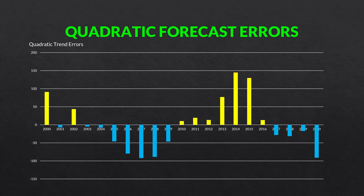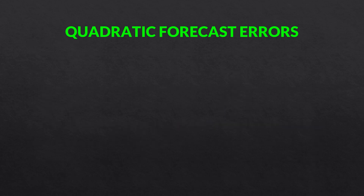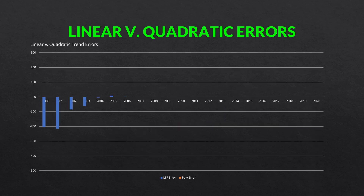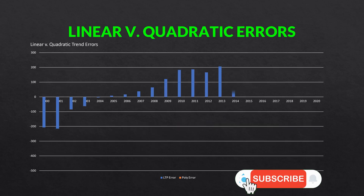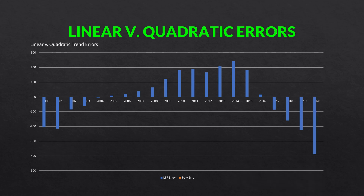Let's look at the errors for the straight line model and the quadratic model on the same graph. Here are the errors for our linear trend projection in blue. Then we have our quadratic trend errors in orange. Look at how much smaller they are — here and there they pop up, but overall they are much, much smaller than the straight line linear model. That's because we are bending the model to fit the data more, so the errors are much smaller.